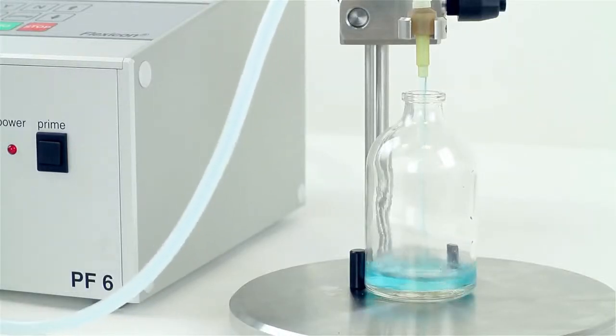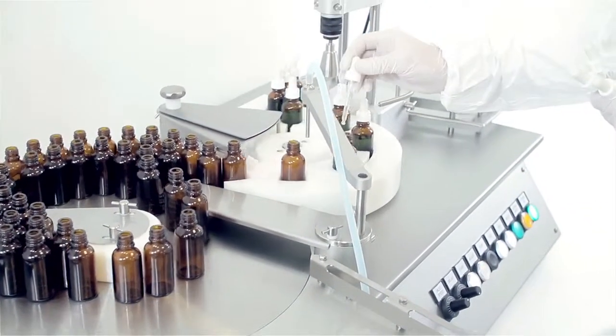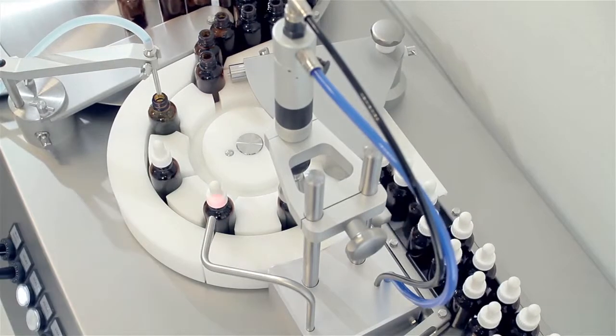The PF6 can be used as a standalone unit for manual filling or can be used with an automatic bottle handling system for larger batch production.